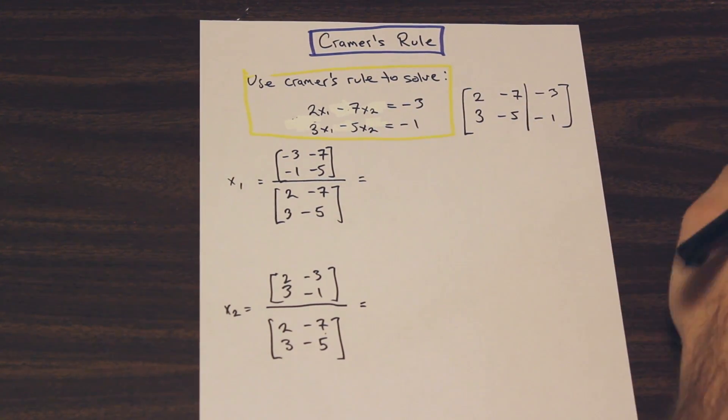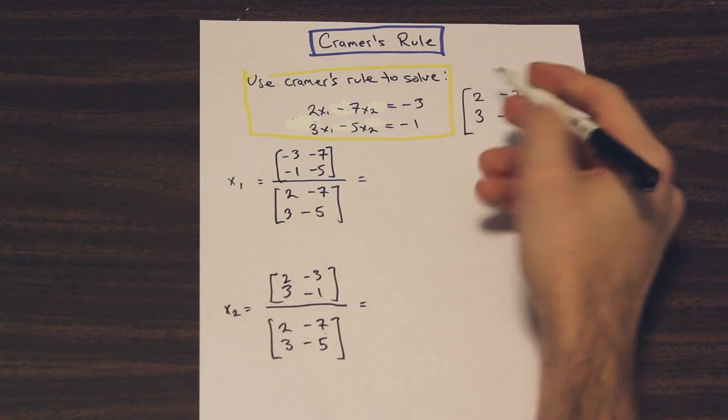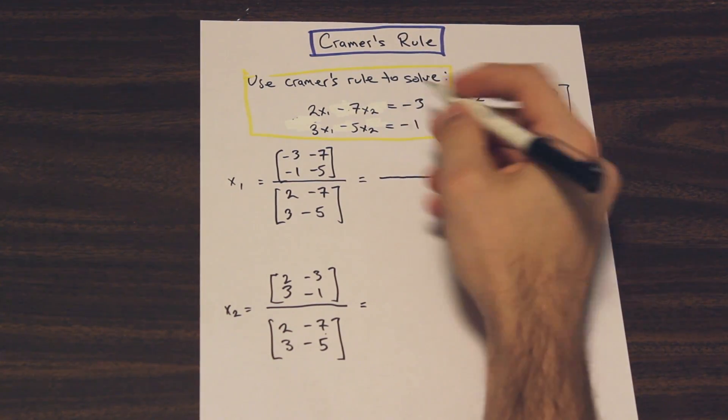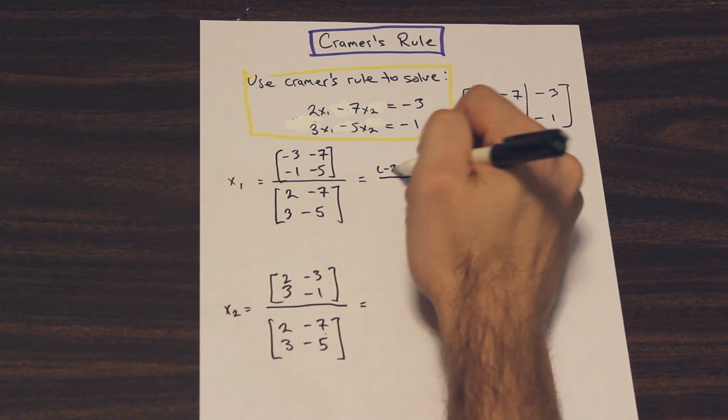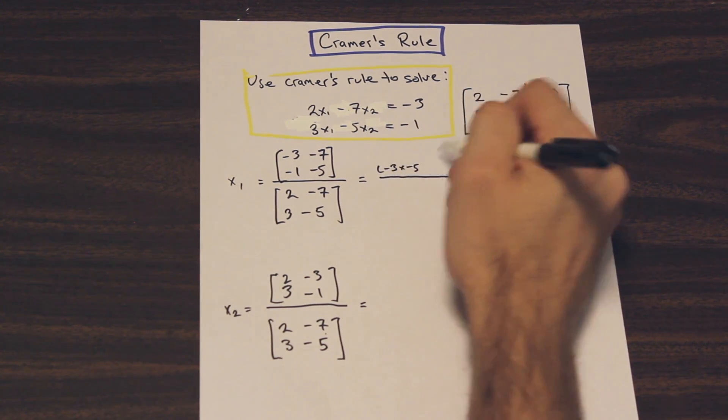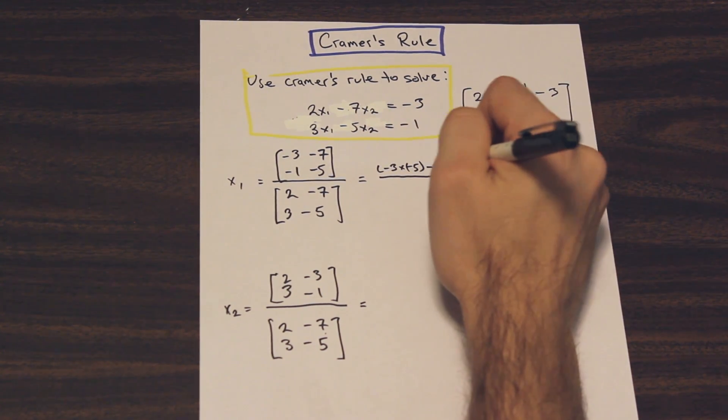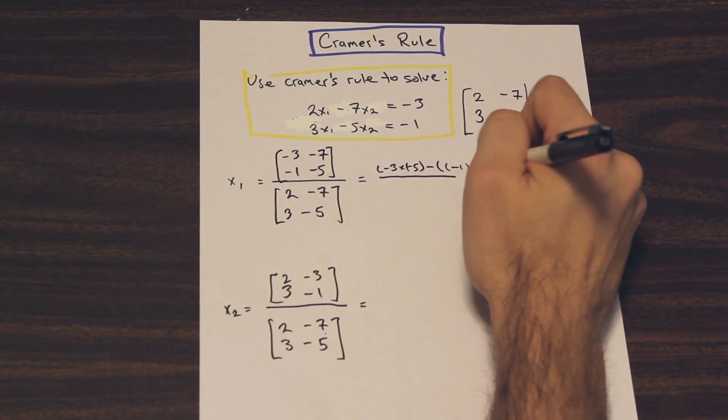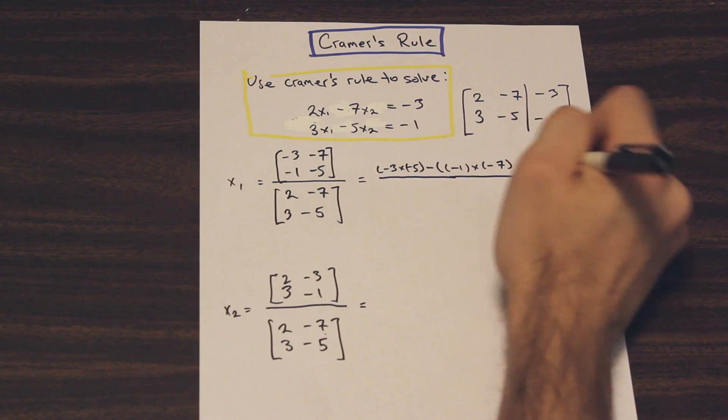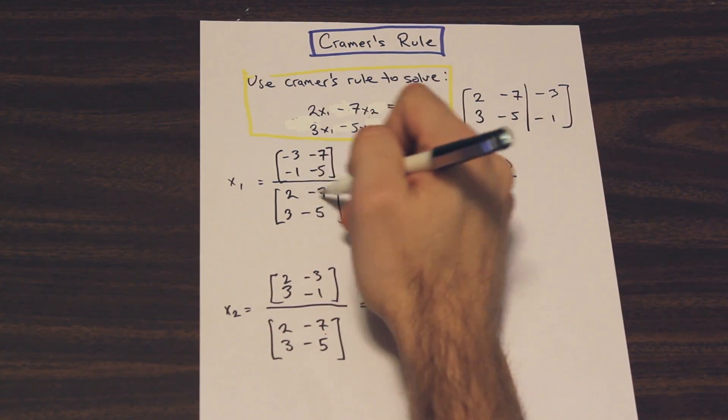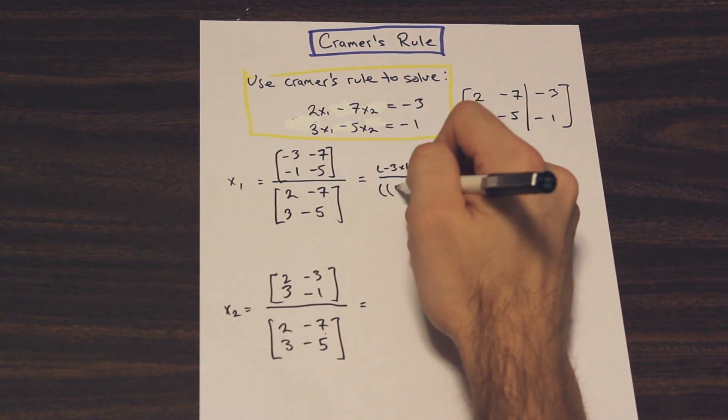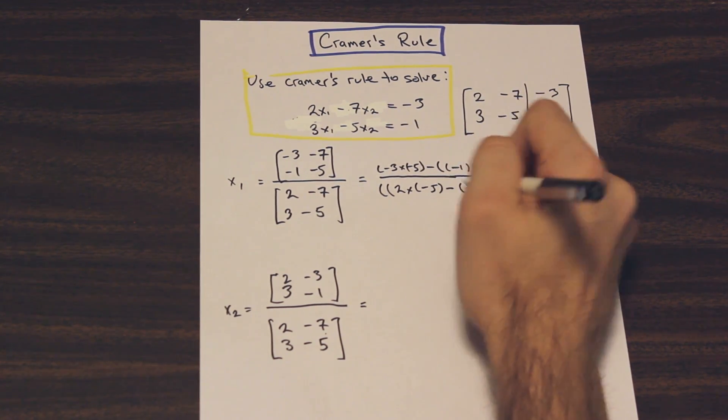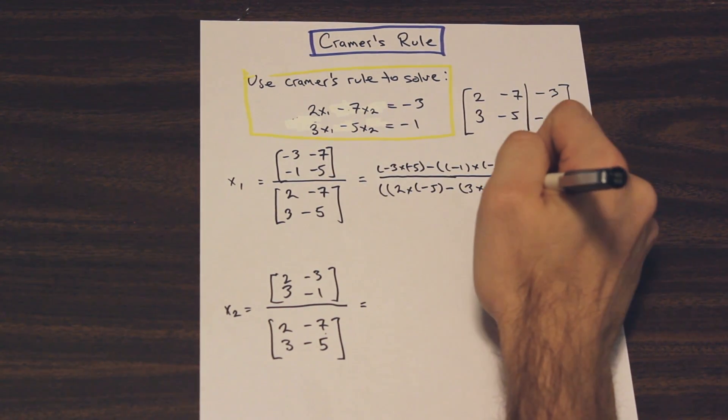So for the top of the fraction, that is going to be equal to negative 3 times negative 5, minus minus 1 times negative 7. And we are going to do exactly the same thing for the bottom. So we have 2 times negative 5, minus 3 times negative 7.